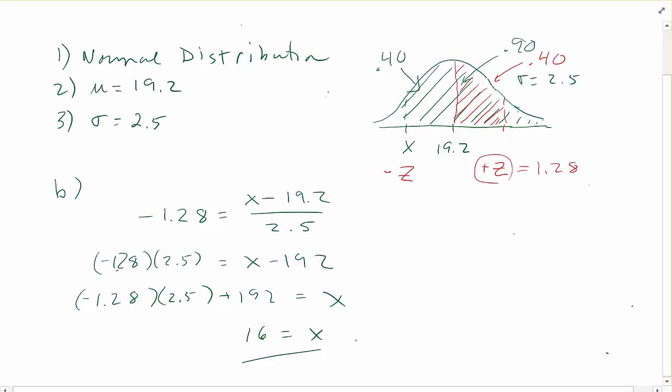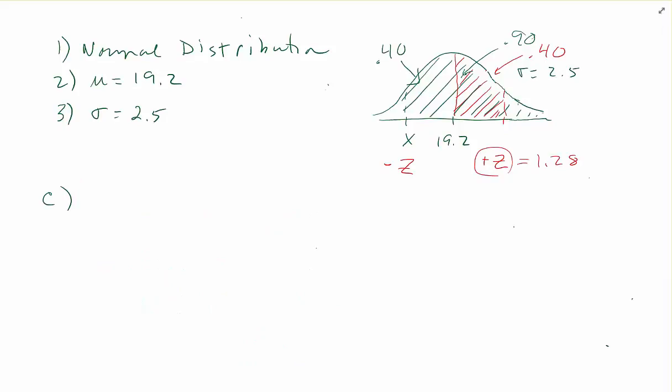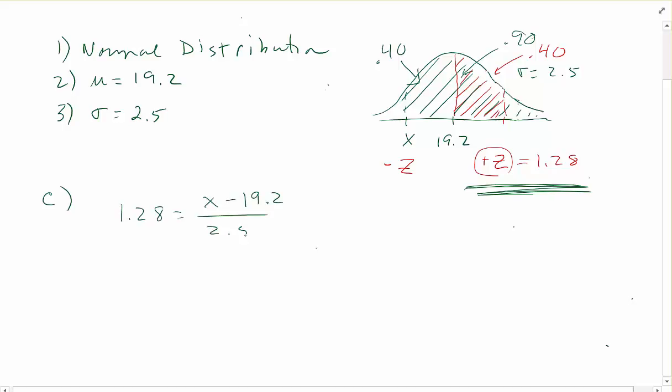Now for empty beds, at least how many beds will be empty? We would have Z equal to the positive 1.28. X minus 19.2 over 2.5. And again 1.28, we'll multiply both sides by 2.5